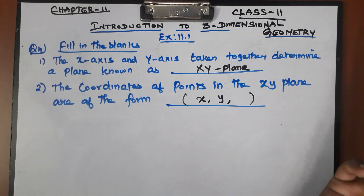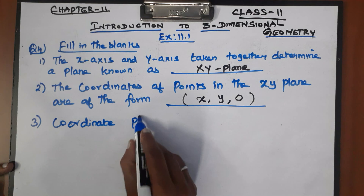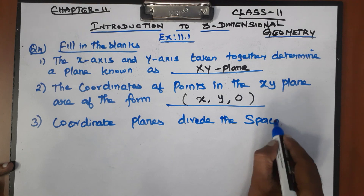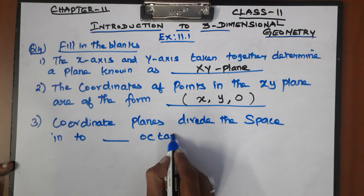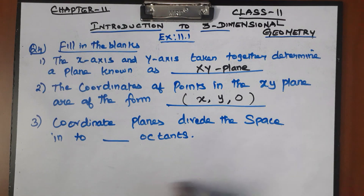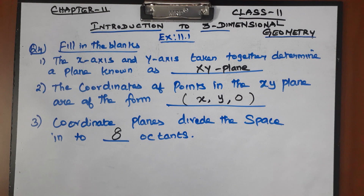Second blank — the coordinates of points in the xy-plane are of the form (x, y, 0), because z equals zero in the xy-plane. Third blank — coordinate planes divide the space into eight octants. If you have any doubt, please tell me in the comments. Like, share, and support. Thank you, students!